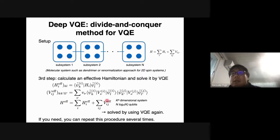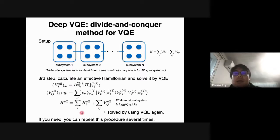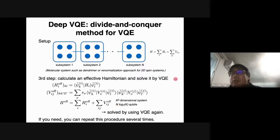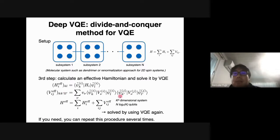The effective Hamiltonian can be reconstructed with dimension K to the N, where K is the dimension of the local subsystem and N is the number of subsystems. This effective Hamiltonian is again solved by using VQE, requiring N log K qubits for the second step VQE. If needed, this procedure — calculating the effective Hamiltonian and VQE — is repeated many times.